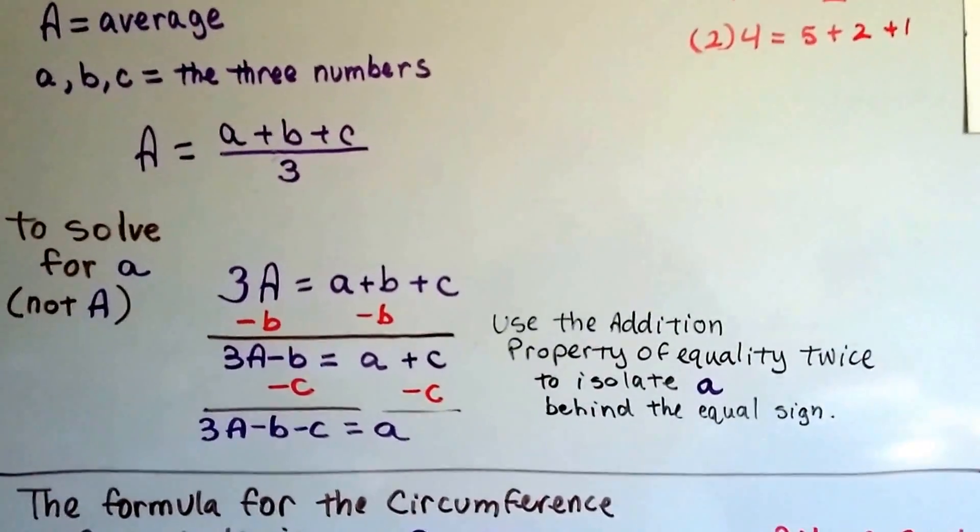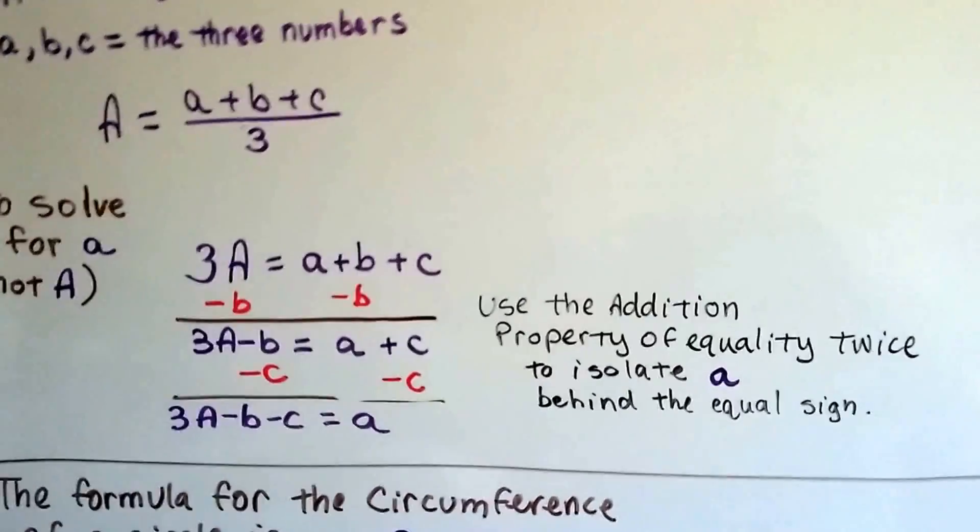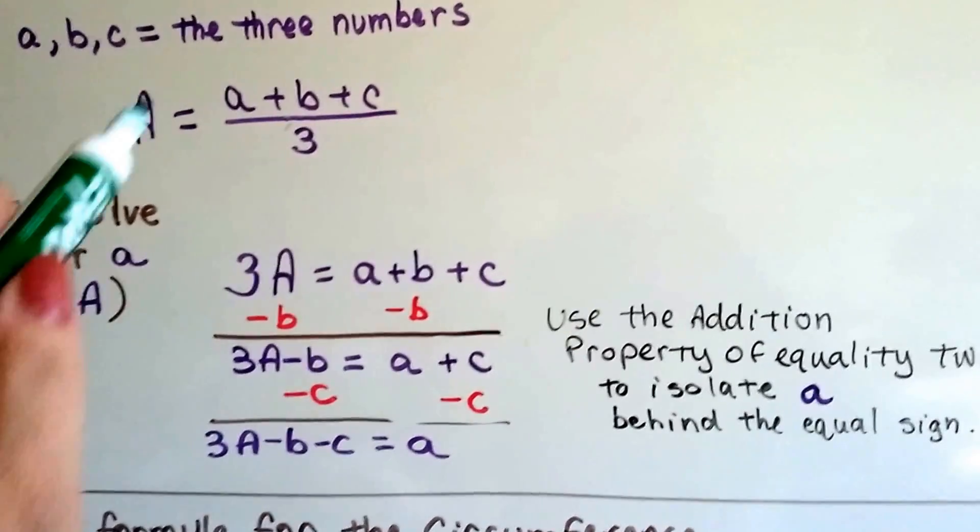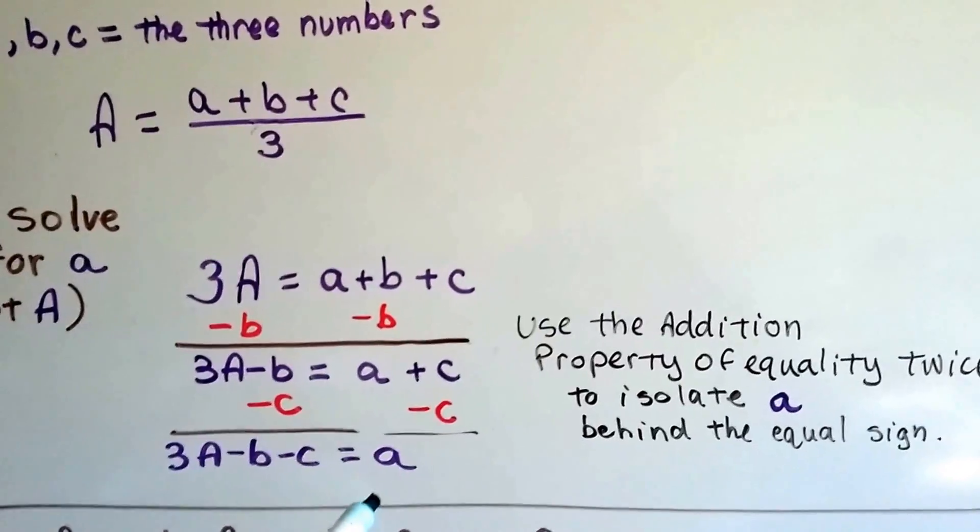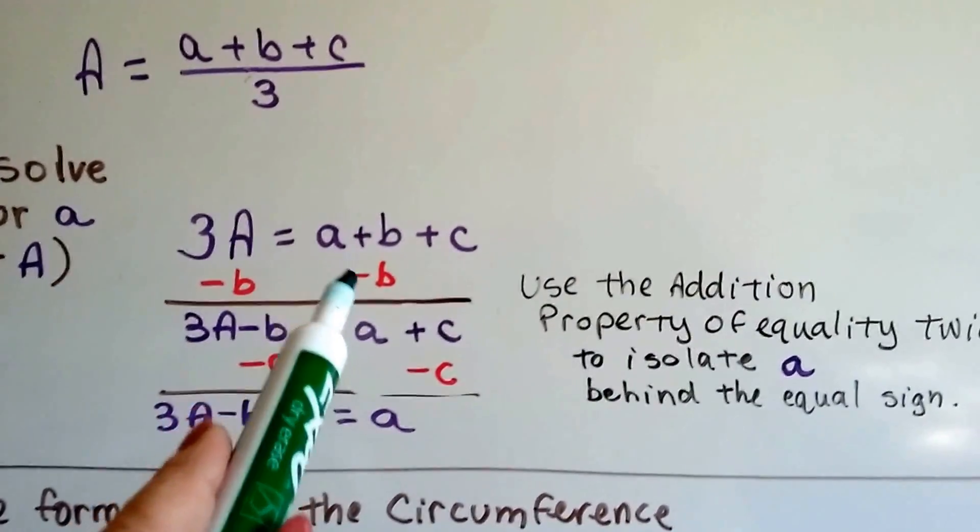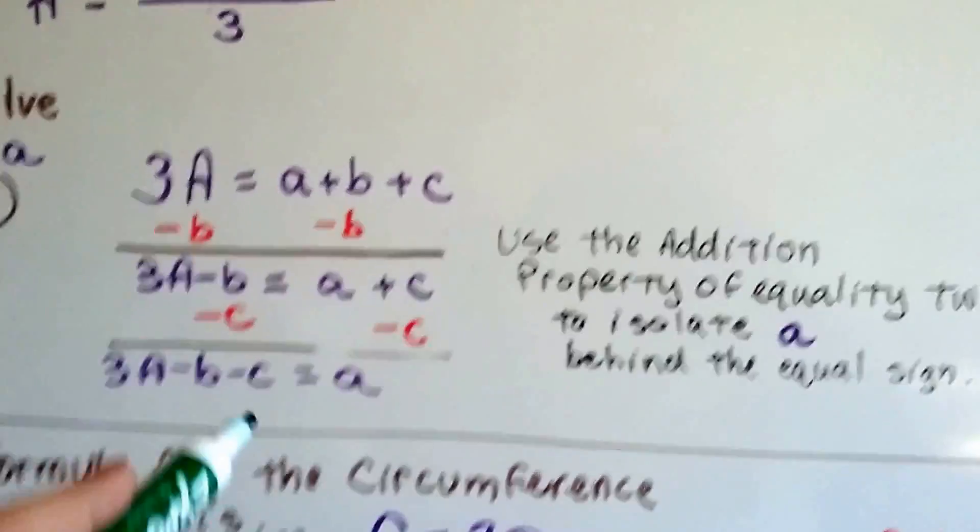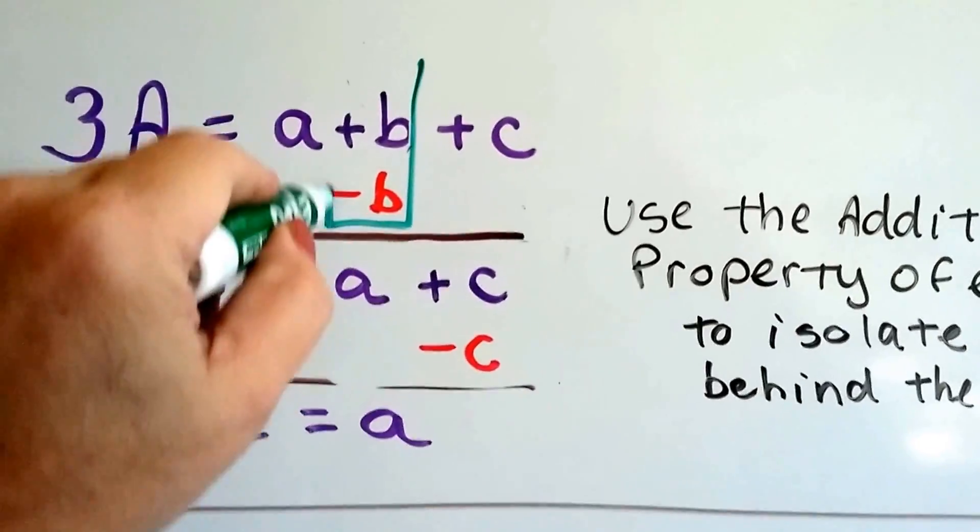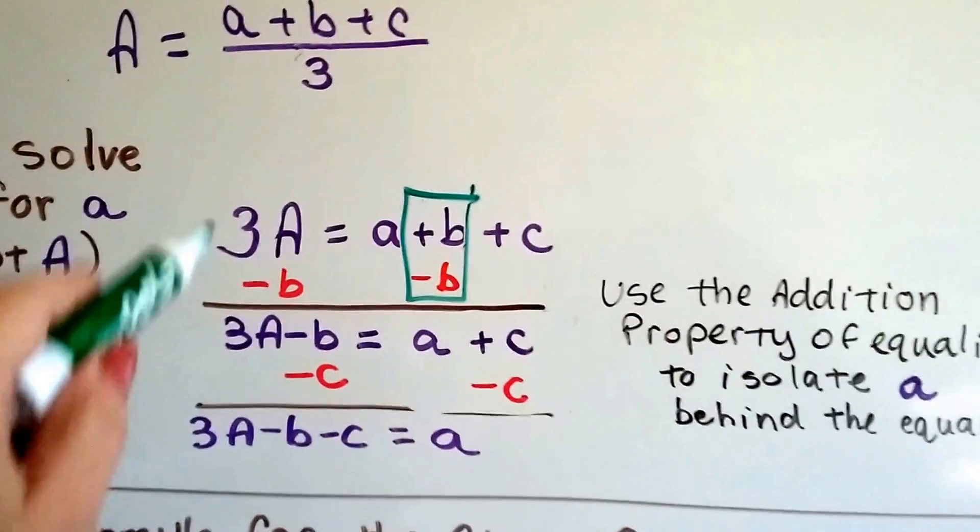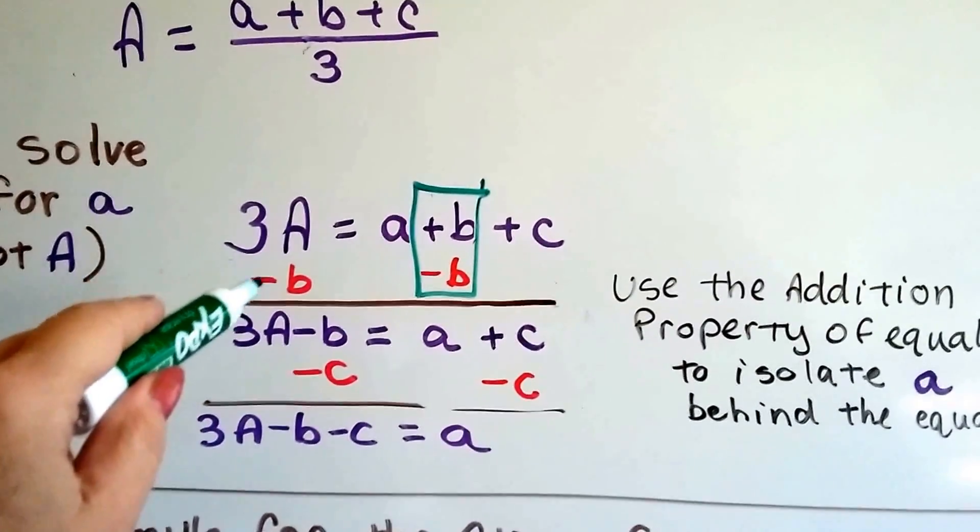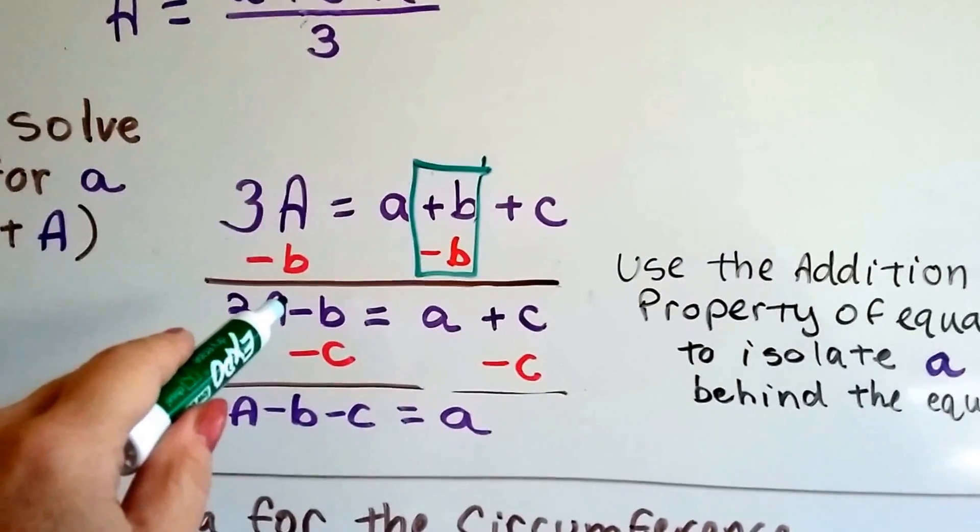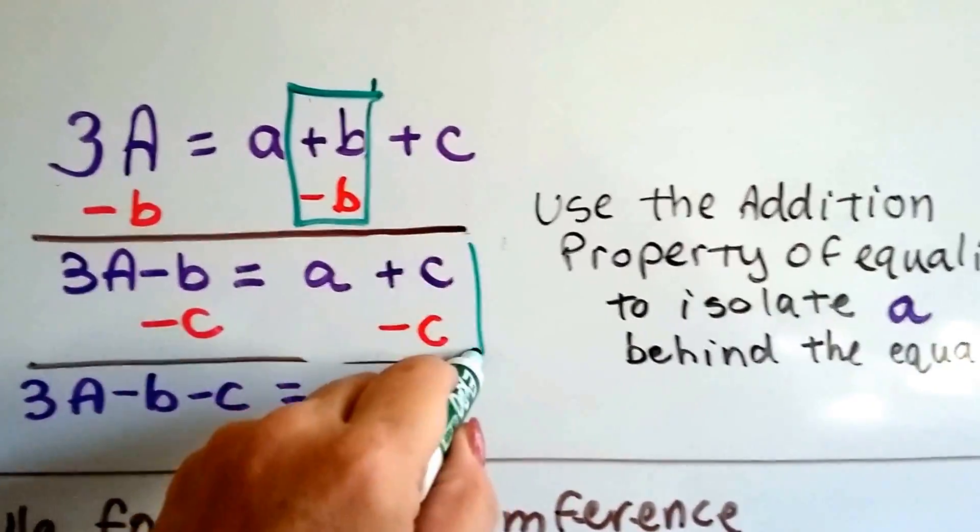Now we can use the addition property of equality twice. The first time, because we're trying to find out what A is, we're trying to solve for A, not the capital A, this little a. So it's like we're trying to find out what the 5 is and we don't know. Now all we have to do is subtract this B and that makes our friend the zero pair and it gets rid of it, and then on this side we subtract the B and now on this side we have 3 capital A minus B. We do it again with the C.